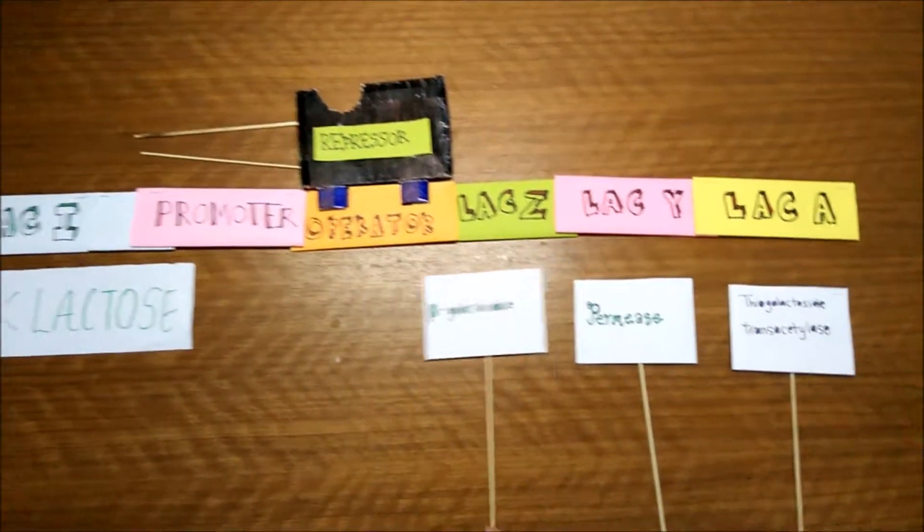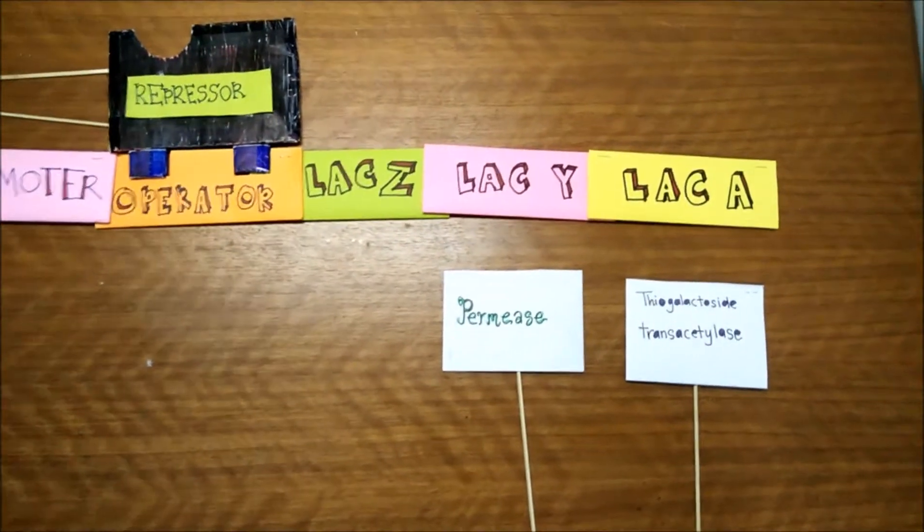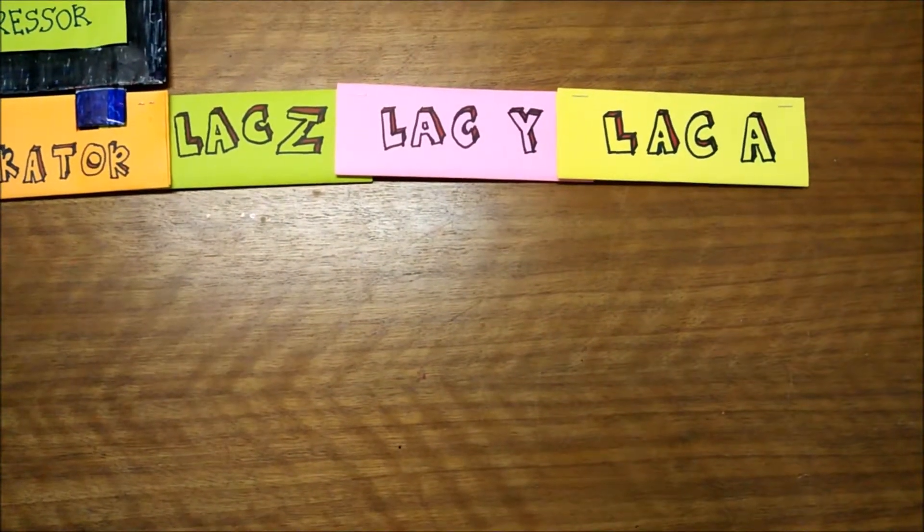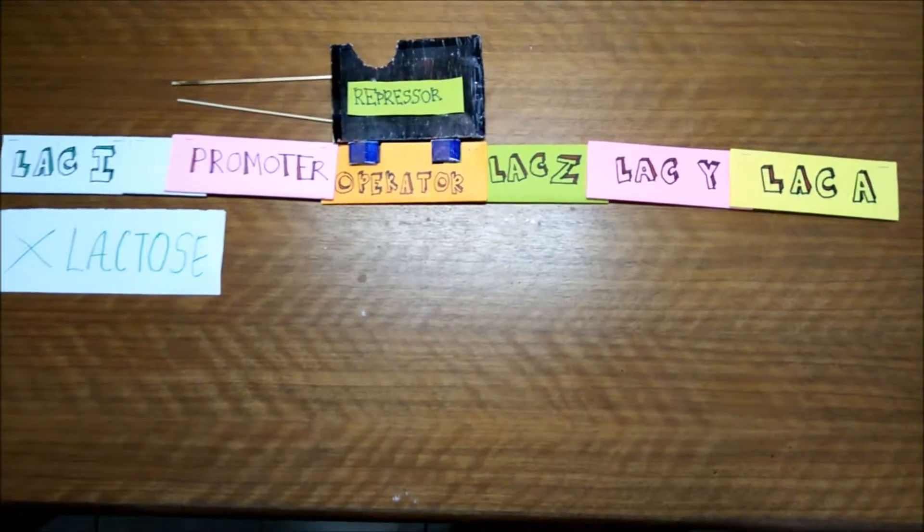Then beta-galactosidase, permease, and thiogalactoside transacetylase cannot be produced. So the operon is switched off.